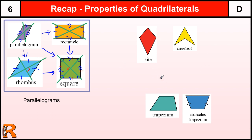Moving on to kites and trapeziums. A standard kite looks like a kite you would fly. It has one line of symmetry and its diagonals cross at right angles — that's one way to confirm something is a kite. There is also the arrowhead shape, which we don't normally associate with the word kite but it is in fact an inverted kite where one of the sides has been pushed in. Its diagonals also cross at right angles and it has one line of symmetry, so it is a kite.